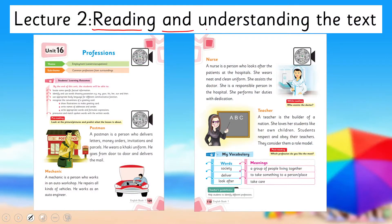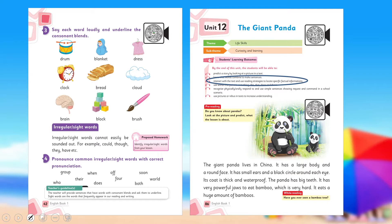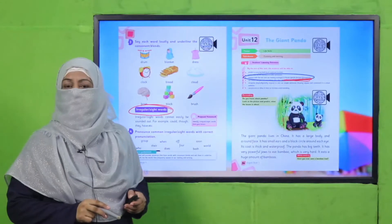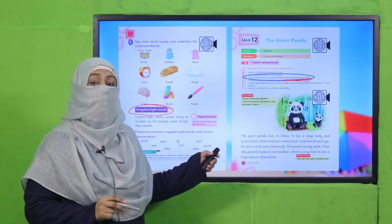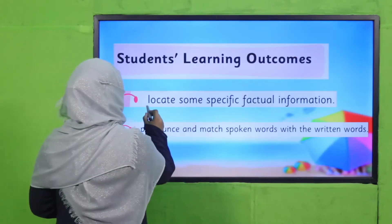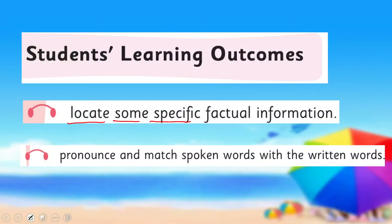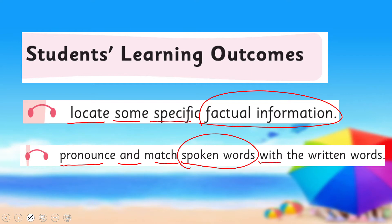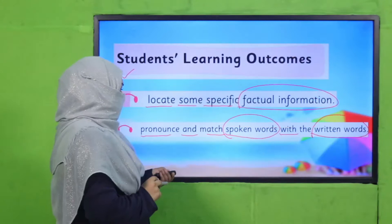I'm going to deliver my lecture according to this lesson plan. Today we are going to start reading and understanding the text of this unit. Before this, I taught you how to locate specific factual information and about sight words. These techniques we have already learned will help us understand today's SLOs, which are: locate some specific factual information, and pronounce and match spoken words with written words.